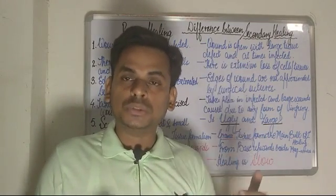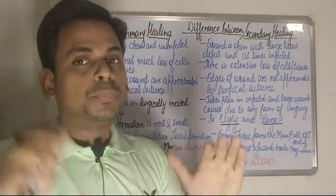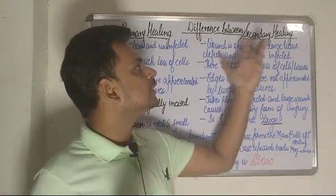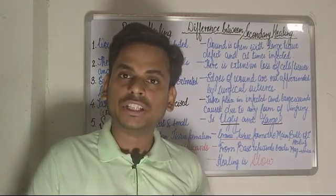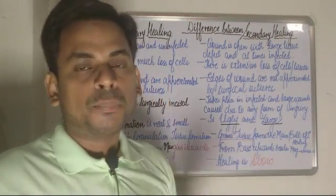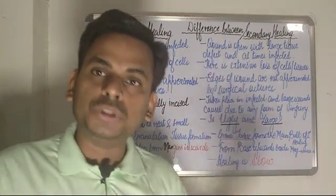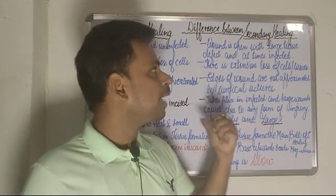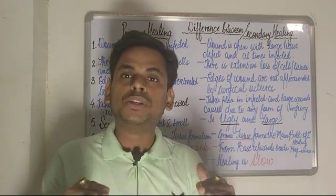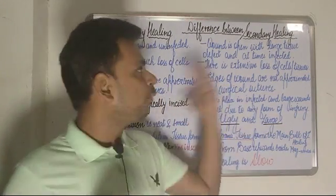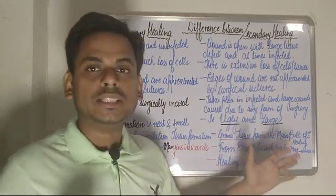The first two stages — the initial hemorrhage and the acute inflammatory reaction — are more or less the same in both primary and secondary healing. However, when it comes to the closure of the wound margins, there is a key difference between the two types of healing.